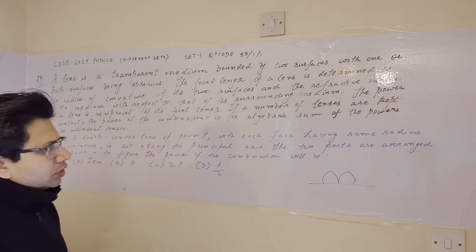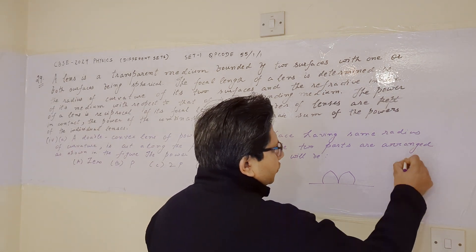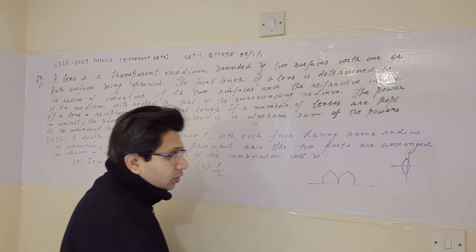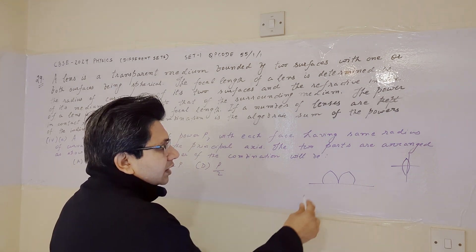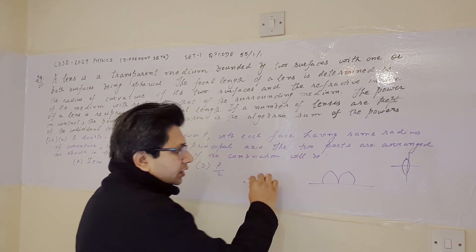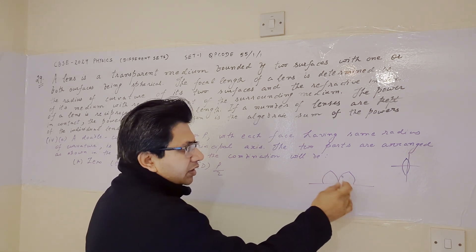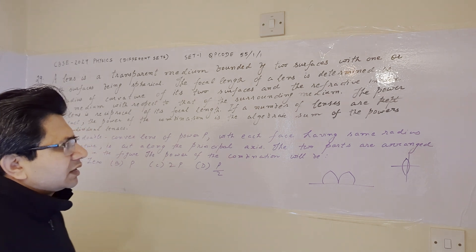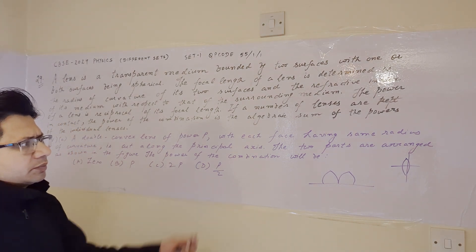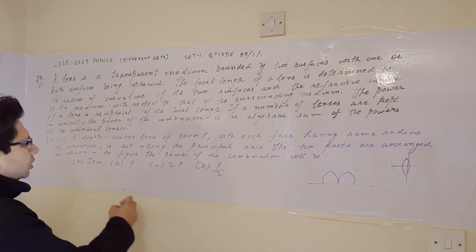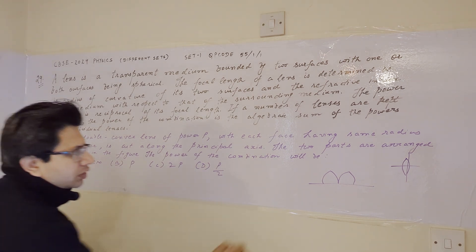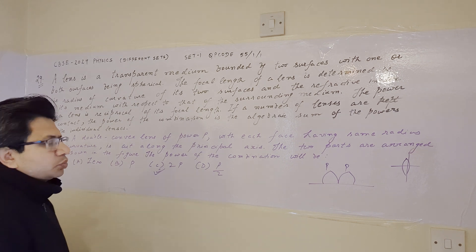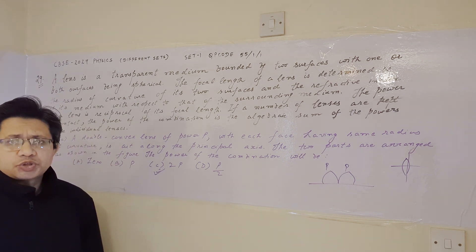In the previous problems, the lens was cut in the perpendicular direction to the principal axis. But in this case, the lens is cut into two pieces along the principal axis and placed in the manner shown in the figure. When these two lenses are kept together in this arrangement, the total power is the sum of the individual powers, and each part is having a power of P. So the total power is 2P. Option C — 2P — is the final answer. Hope you understand the solution. Thank you.